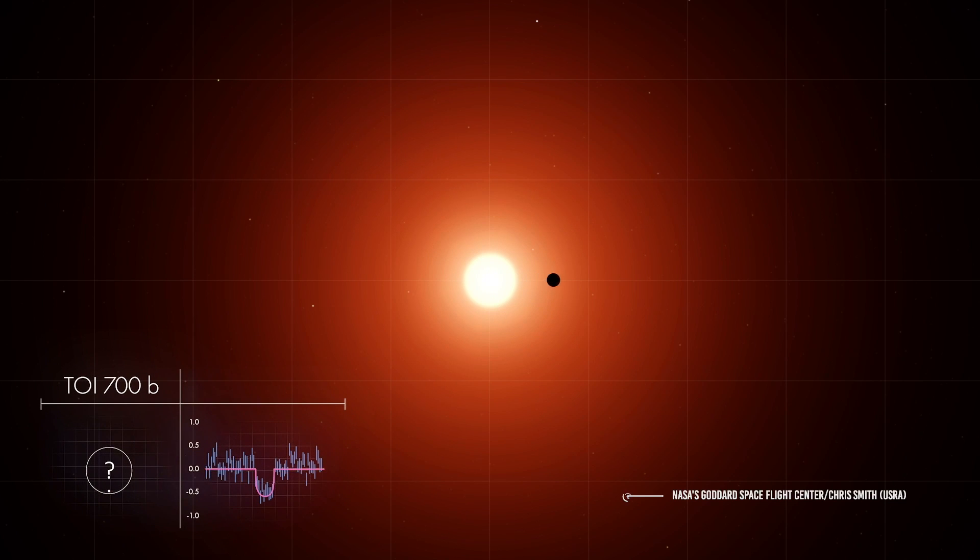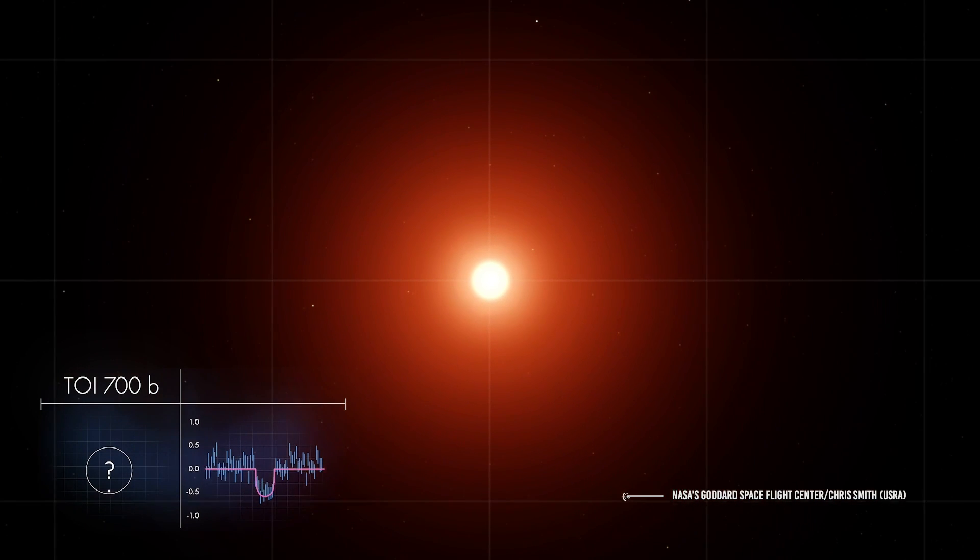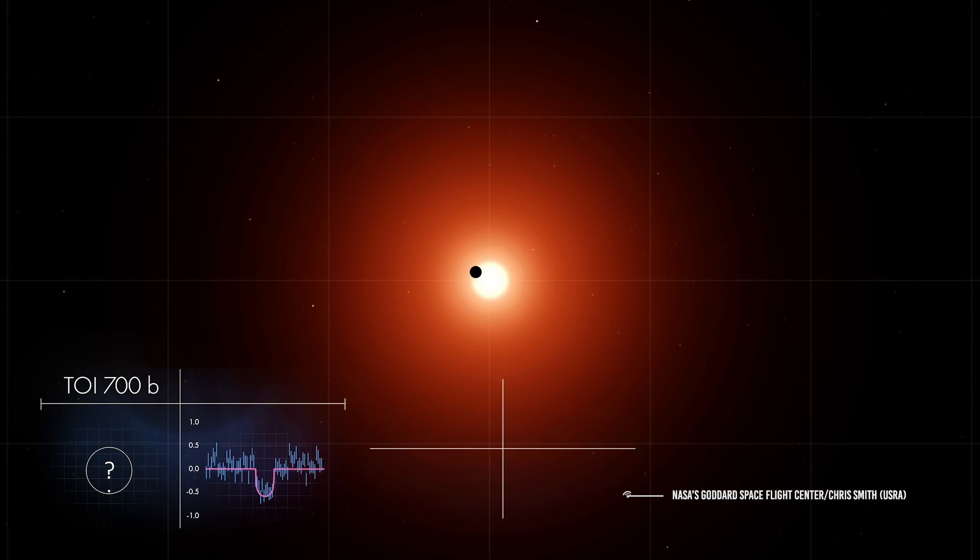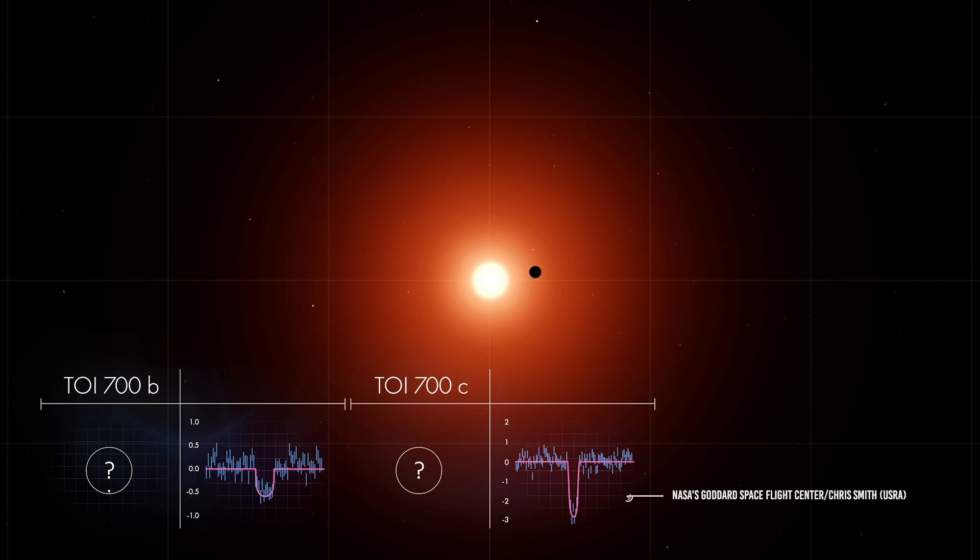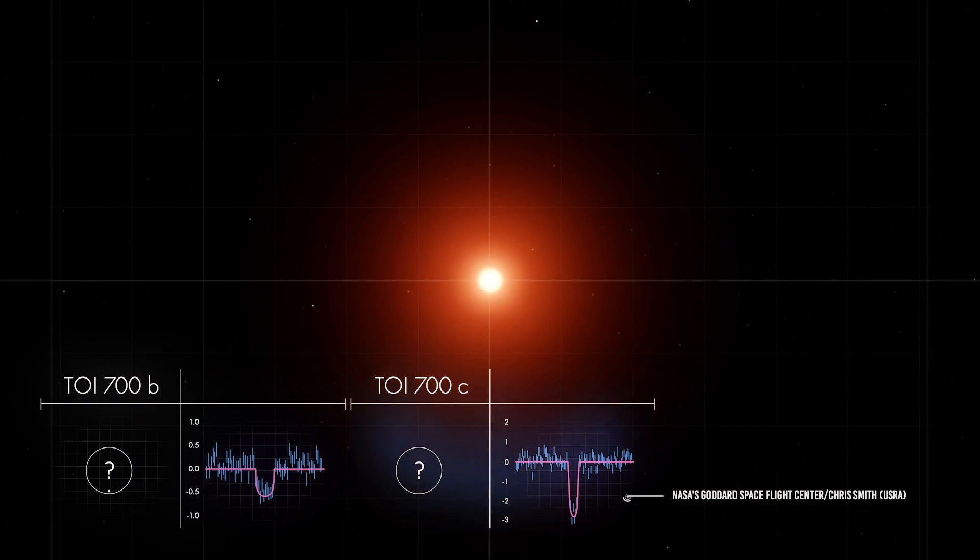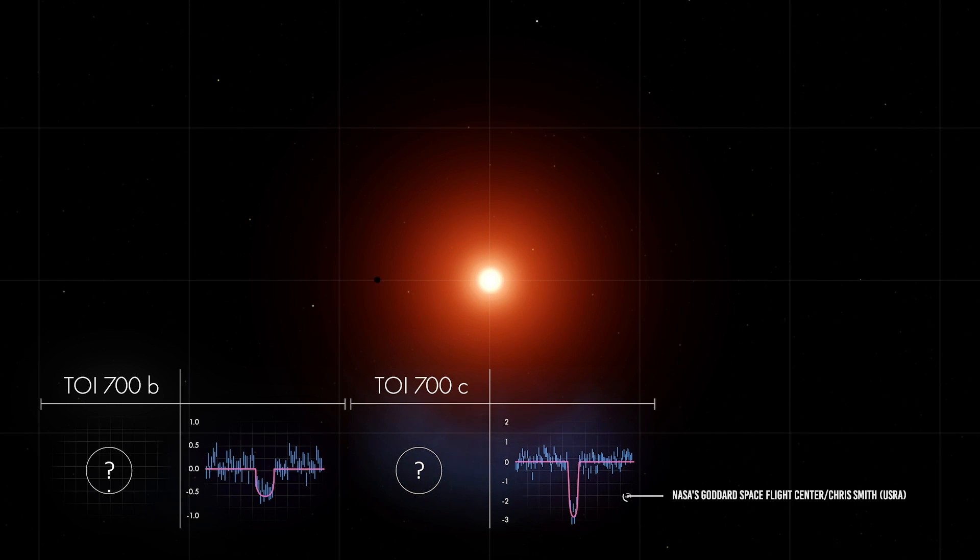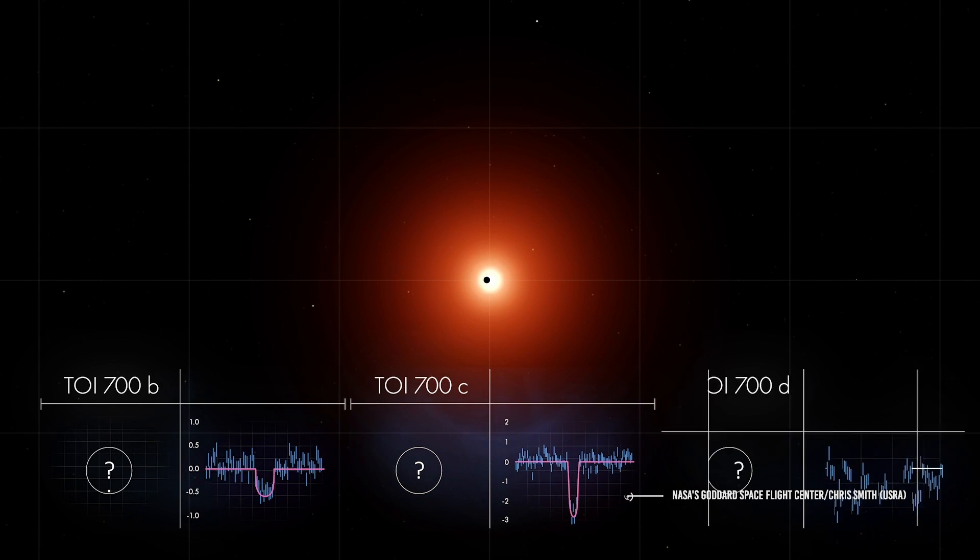When an exoplanet photobombs a star that our telescopes are looking at, the starlight experiences a drop in energy that matches the molecules in the exoplanet's atmosphere. By studying the blip in the starlight, Webb can chemically examine the atmosphere of the star's planet if it happens to be staring at the right star at the right time.